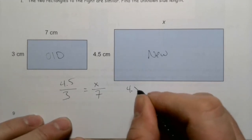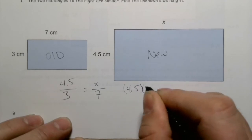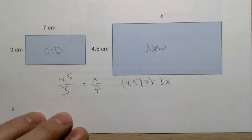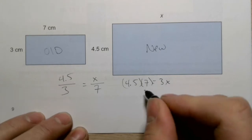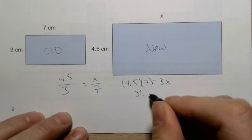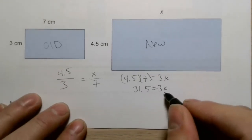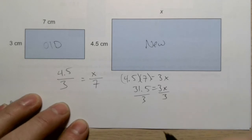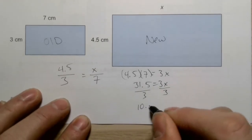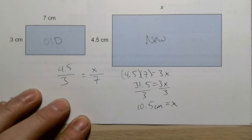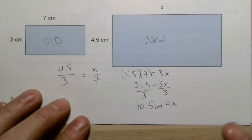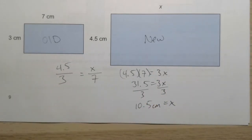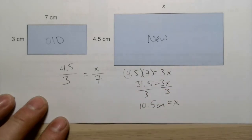Cross multiplying: 4.5 times 7 equals 3 times x. On the calculator, 4.5 times 7 gives 31.5, so 31.5 equals 3x. Dividing both sides by 3: 31.5 divided by 3 gives 10.5 centimeters as the new length. We just needed enough information to come up with a scale factor.